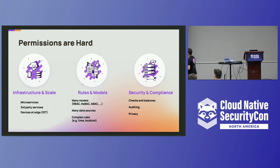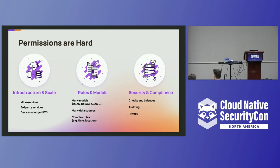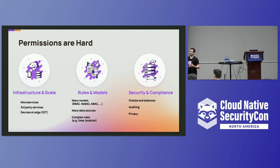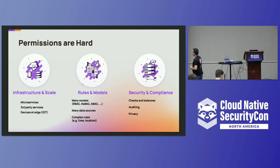While almost all developers know what role-based access control is, eventually you'd want to move to more complex systems. If you want access based on user location, you cannot do that with role-based access control — you'd probably want to move to attribute-based access control. Or if you want access based on ownership and more fine-grained permissions, you probably need relationship-based access control. These systems are difficult to grasp and are difficult to implement.